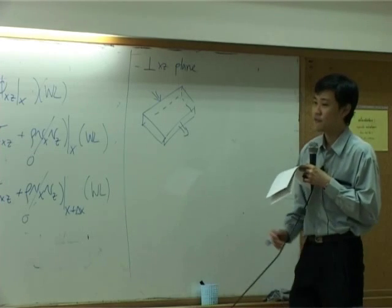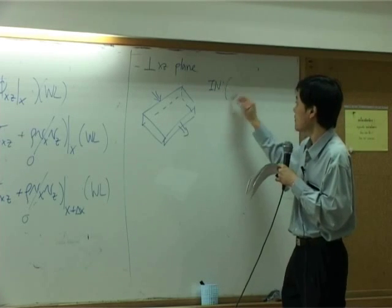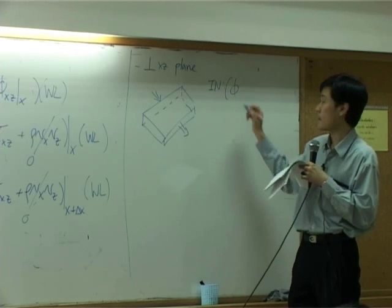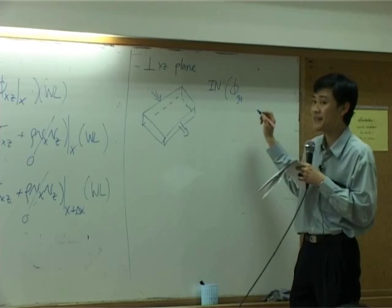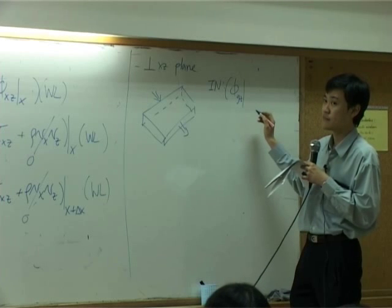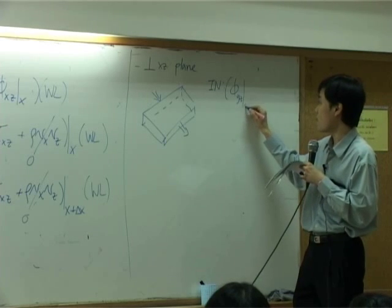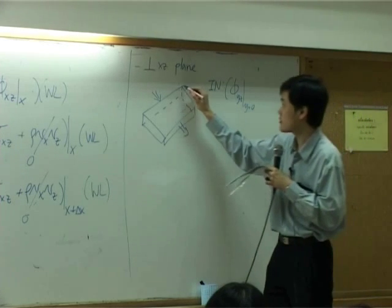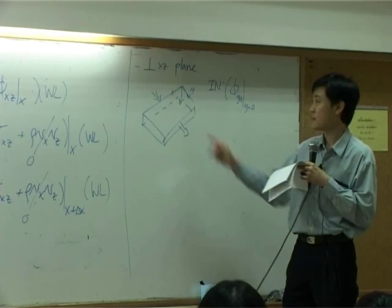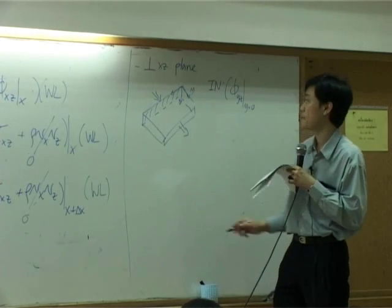You can, just for the sake of completeness, say that input in this plane is basically VYZ coming in at Y equal to zero. Because the direction looks something like this. This is Y direction. It's coming in at this plane. This plane is located at Y equal to zero.